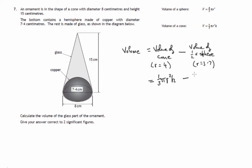And we subtract the volume of half of a sphere. So it's a half of 4 thirds pi r cubed.